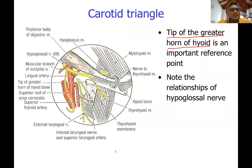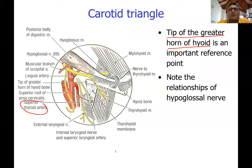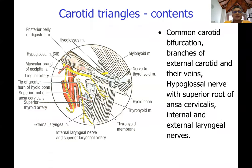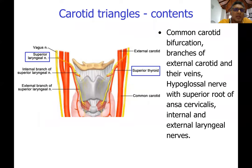In the carotid triangle, you also get the bifurcation of the common carotid artery into the external and internal carotid arteries. You can see the branches of the external carotid artery — the superior thyroid artery lies in the carotid triangle. You also get the superior laryngeal branch of the vagus nerve, which divides into internal and external laryngeal nerves. The carotid triangle is where you can feel for the carotid pulse.